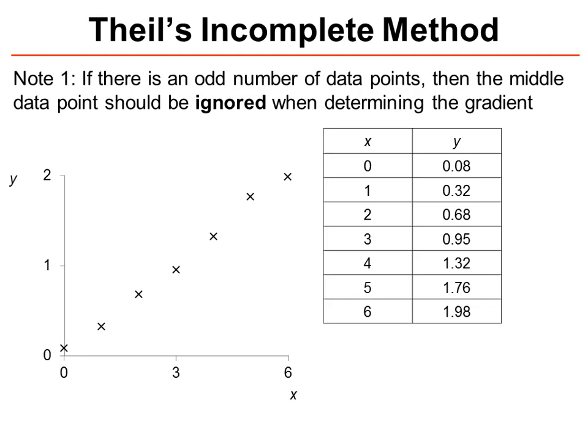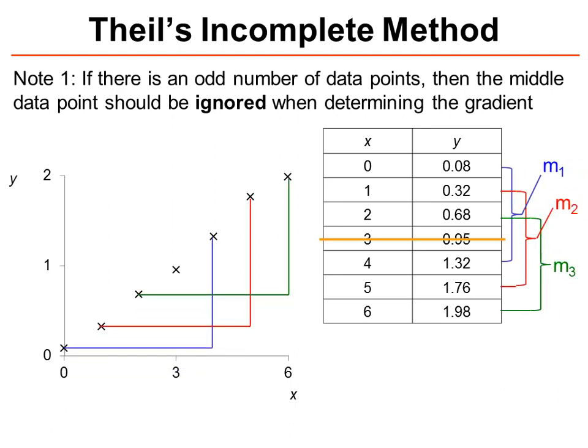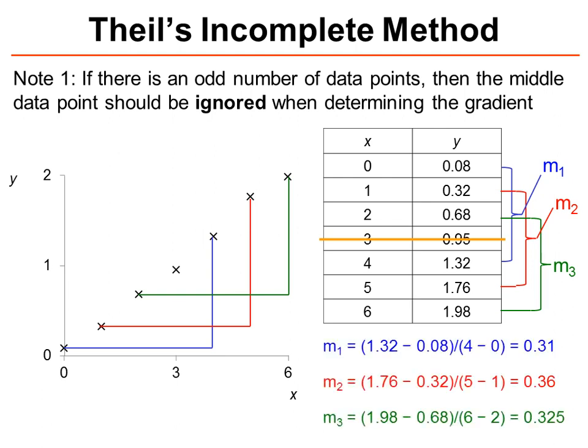So first of all, if there's an odd number of data points, then the middle data point should be ignored when determining the gradient. After this, we then pair the data points from the low group and the high group and determine the gradients for each of these pairings as before. And we take the median value as the gradient for the line of best fit, which in this case is 0.325.